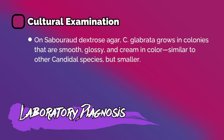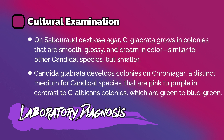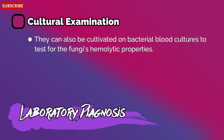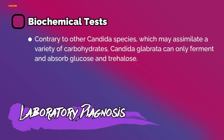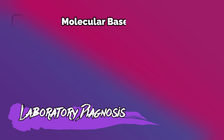For cultural examination, on Sabouraud dextrose agar, Candida glabrata grows in colonies that are smooth, glossy, and cream in color, similar to other Candida species but smaller. On chromagar, Candida glabrata develops pink to purple colonies, in contrast to Candida albicans colonies which are green to blue-green. They can also be cultivated on bacterial blood culture to test for fungal hemolytic properties. Candida glabrata can only ferment and assimilate glucose and trehalose, unlike other Candida species which assimilate a variety of carbohydrates.